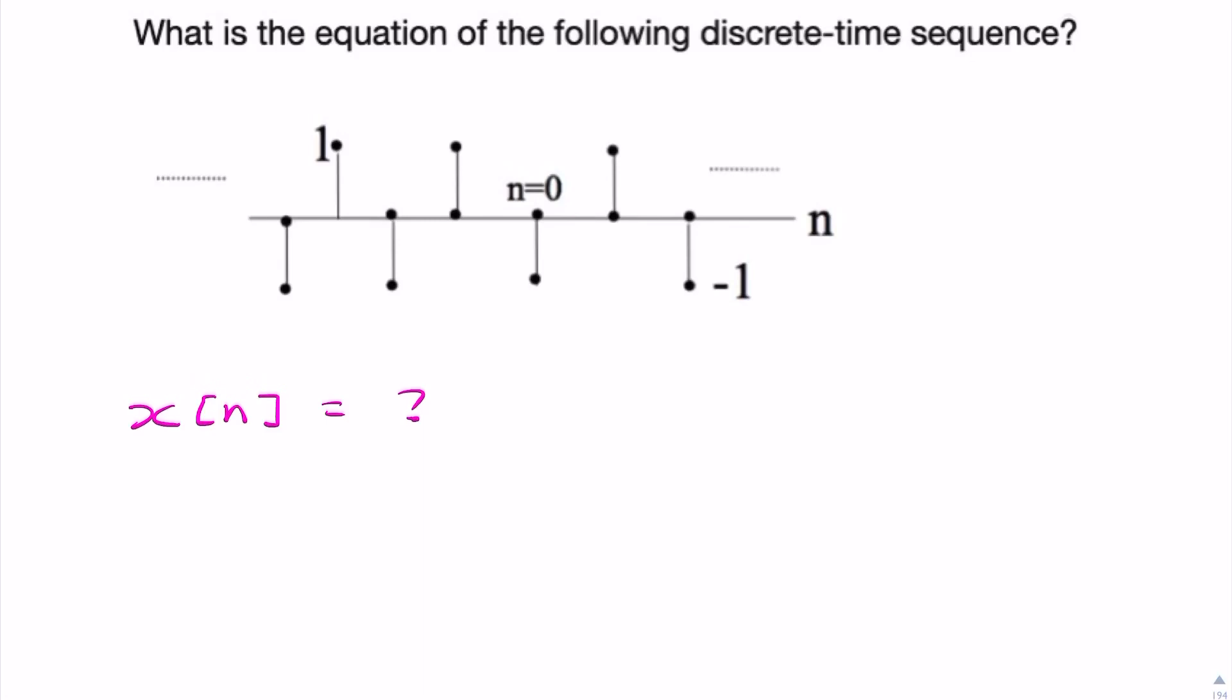So if we just label this slightly, that's n equals 0, n equals 1, n equals 2, n equals minus 1, n equals minus 2, n equals minus 3, n equals minus 4.